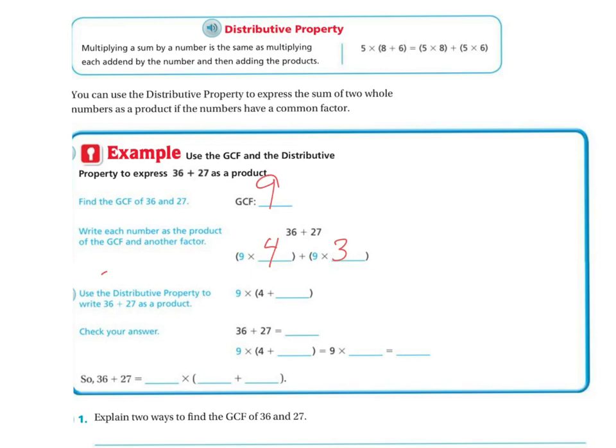So now if I use the distributive property to write 36 plus 27 as a product, I've got 9 times 4 plus 3. So you can see here's my 4 and my 3. And then I'm going to check my answer. So 36 plus 27 is 63. And then I have 9 times, and remember it was 4 plus 3. And 9 times 7 equals 63. So I'm getting the same answer, right? So 36 plus 27 is 9 times 4 plus 3.